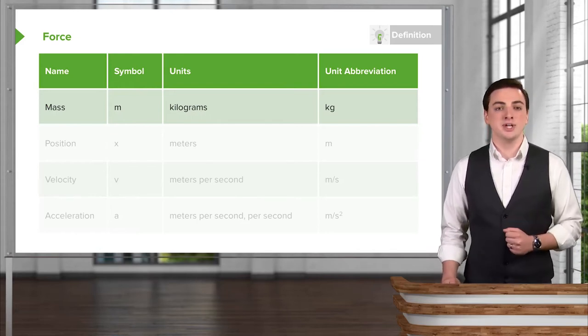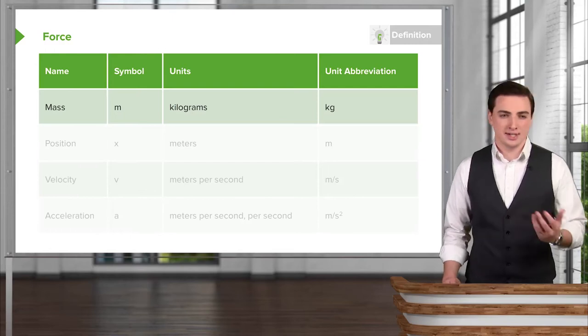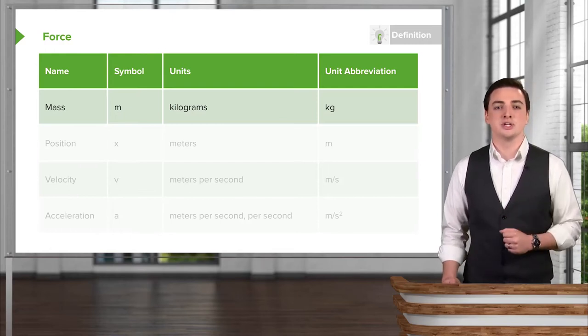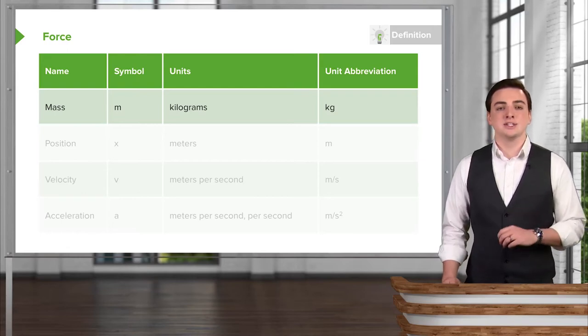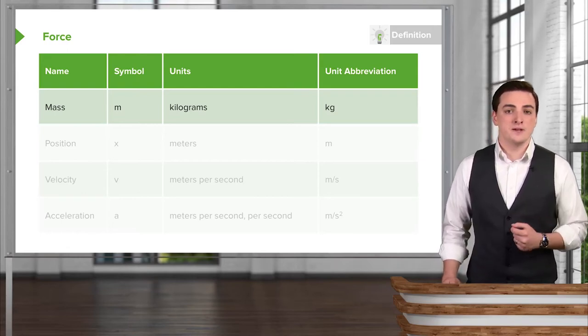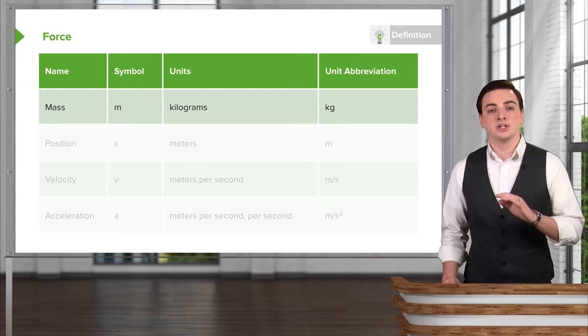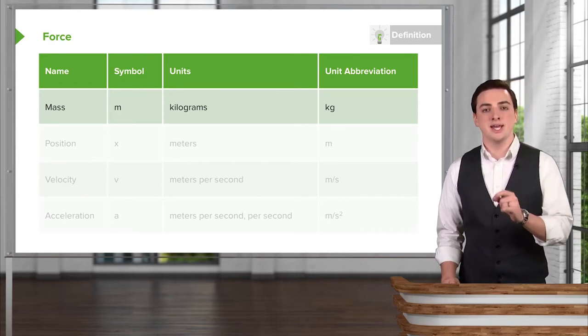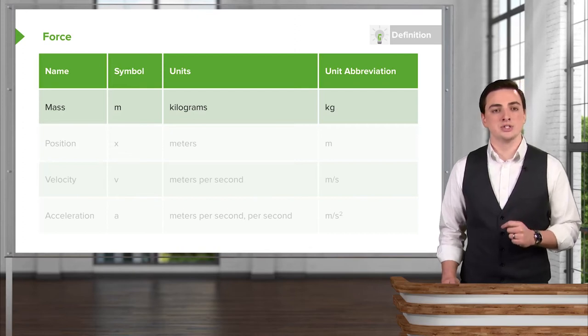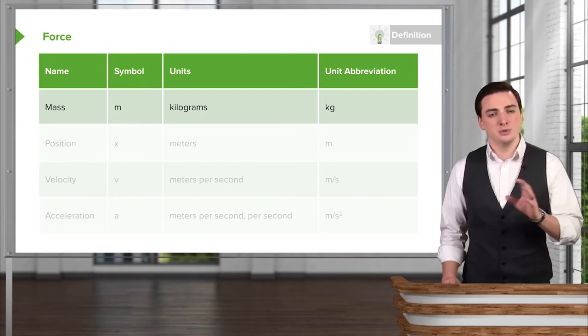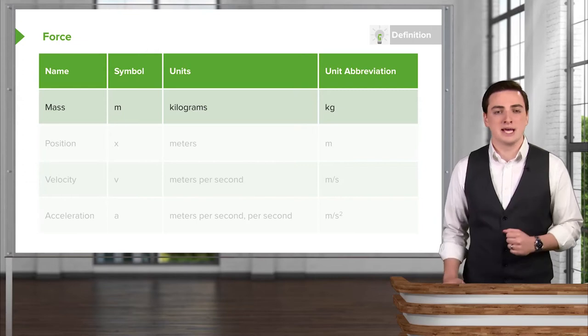The mass of an object is a measure of how much it does or doesn't want to move if you start pushing on it, or how hard it is to stop if it's already gotten going. The mass is represented with the symbol m in our equations, while its units are kilograms, which are represented by kg.